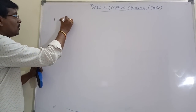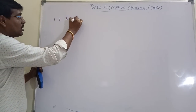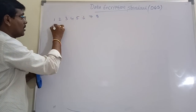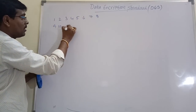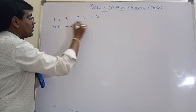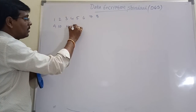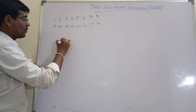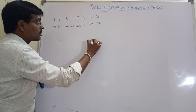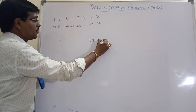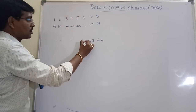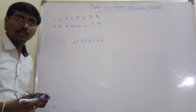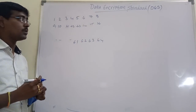Permutation means simply changing of the positions. The initial numbers are 1, 2, 3, 4, 5, 6, 7, 8, 9, 10, 11, 12, 13, 14, 15, 16 ... so on up to 63, 64. Initially the numbers are arranged in this order.